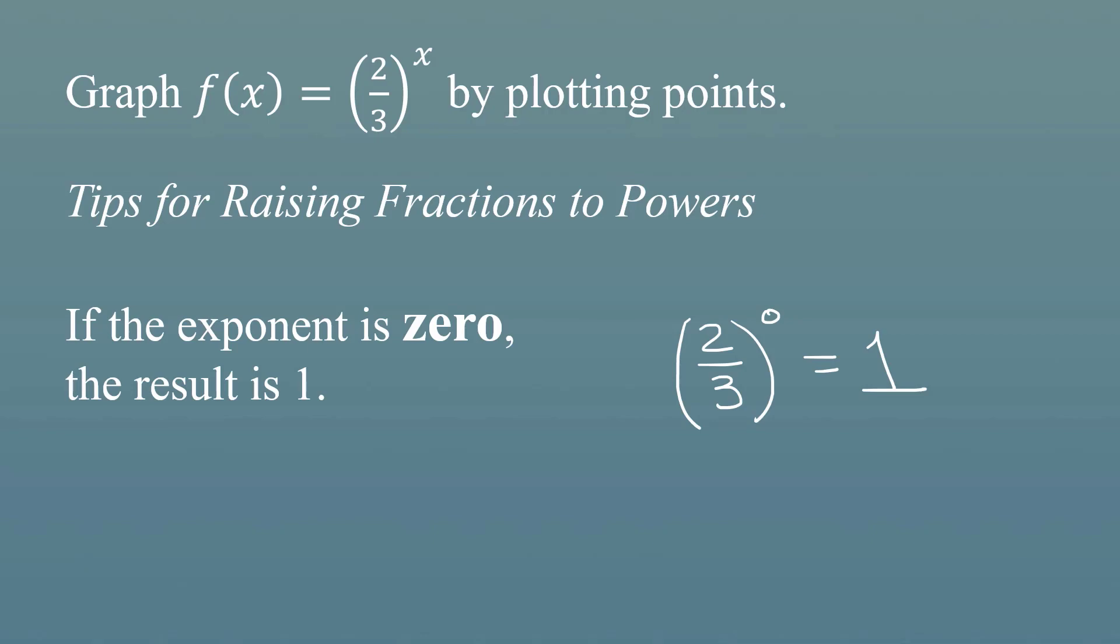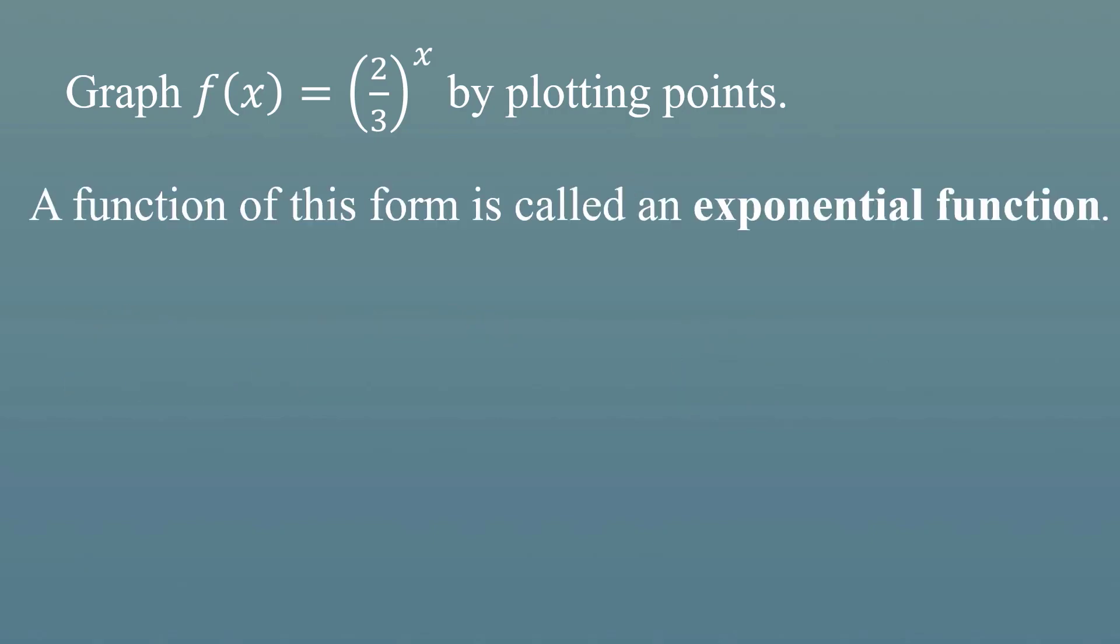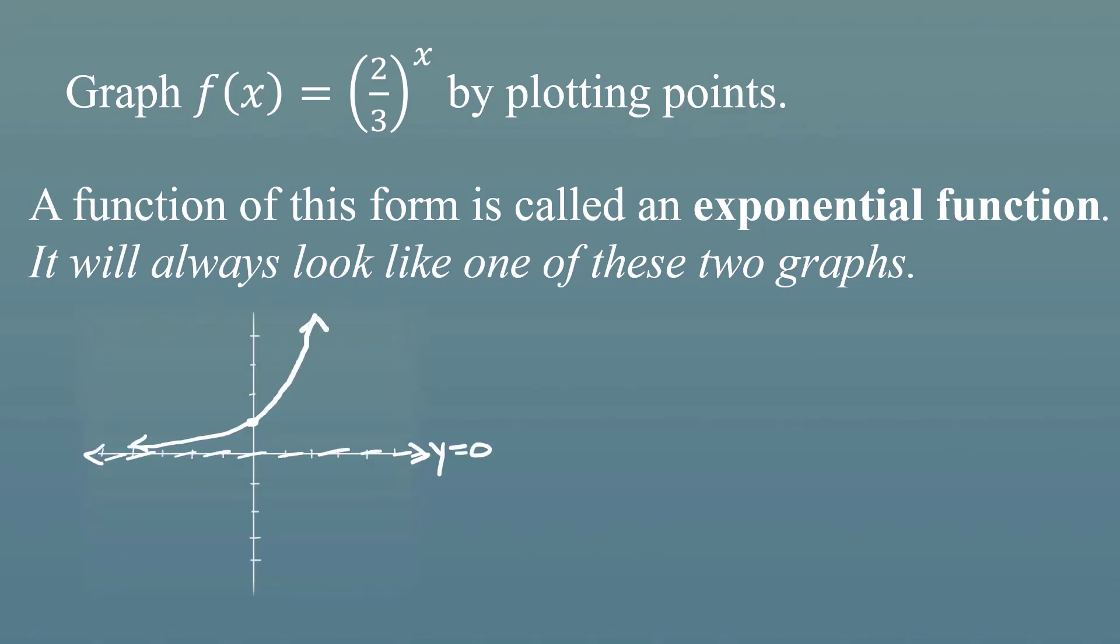Another thing that's good to know when you're going to graph an exponential function by plotting points is what to expect the graph to look like. Any function of this form is called an exponential function because we have a variable x in the exponent. The graph is going to be one of two types of graphs. It will either look like this, rising from left to right, but never crossing the x-axis. Or it'll look like this, falling from left to right, but never crossing the x-axis. Those two lines, y equals zero along the x-axis, are called asymptotes. While it is possible to cross an asymptote sometimes in these functions, that will never happen.